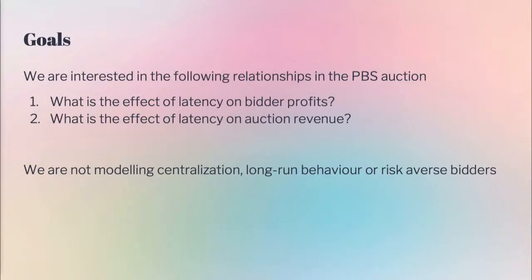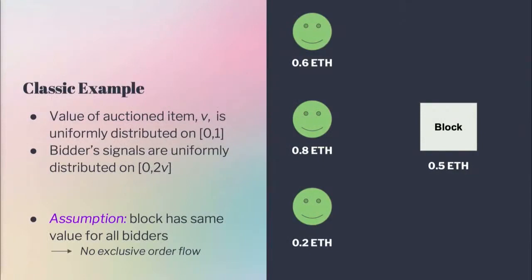We're only looking at the behavior between bidders. The classic example for such an auction is a common value auction where the auctioned item follows some distribution — say uniform on 0 to 1 — and all bidders get a signal based on this distribution, identically distributed. For example, some builders might think the block will be worth 0.6 ETH, and others might think it's worth 0.2 ETH, but the important part is they don't actually know, and some may overestimate this. We're assuming the auctioned item is pure common value, so we're not looking at exclusive order flow for now.